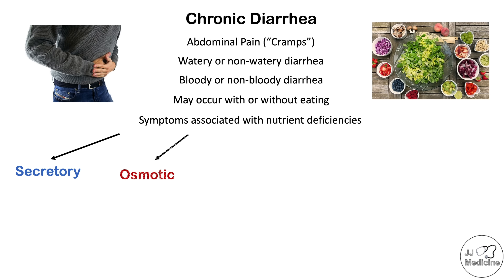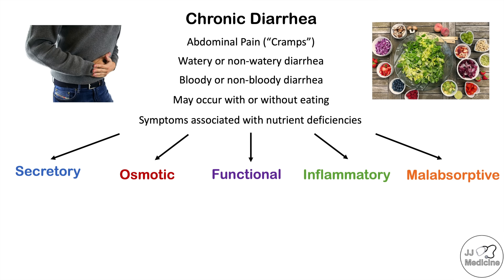There are actually multiple categories of causes of chronic diarrhea. These categories are: secretory, osmotic, functional, inflammatory, and malabsorptive. We're going to get into a lot of detail in the upcoming slides about the different causes that fall within each category.